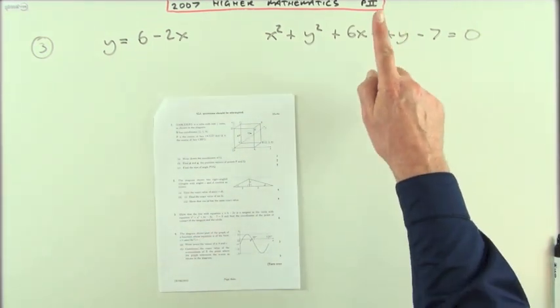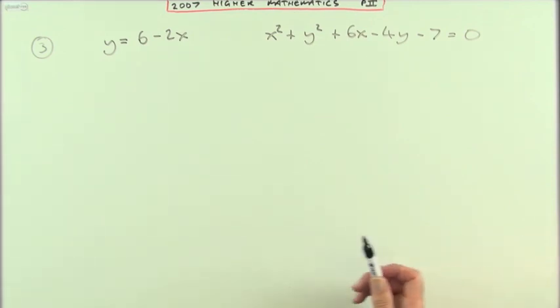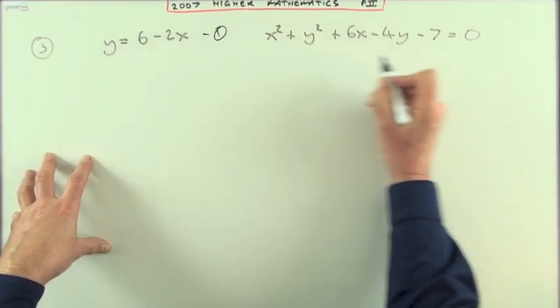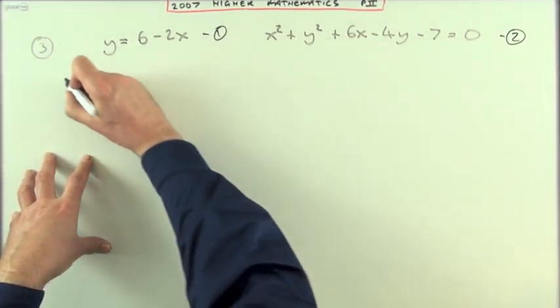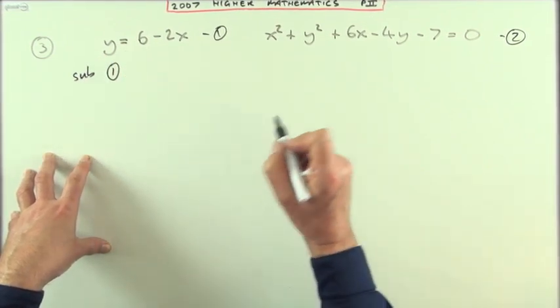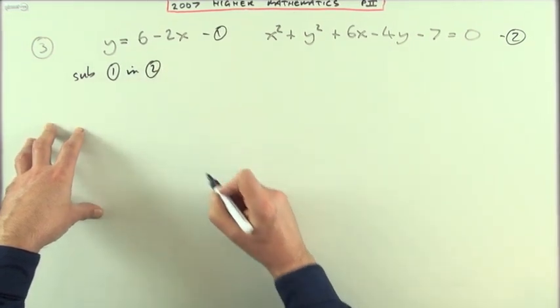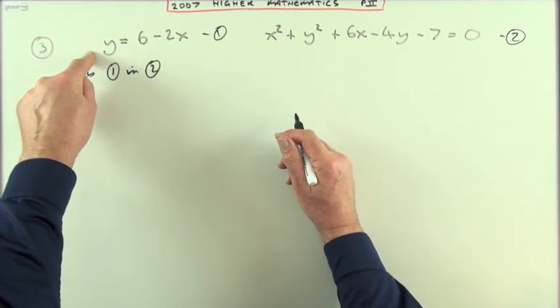Well, that'll be a substitution then. So I take my two equations and I'll just proceed as if I was going to carry out a substitution to find a point of intersection. So I'm going to substitute equation one in equation two wherever I see a y.